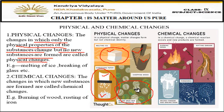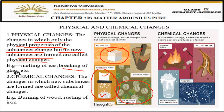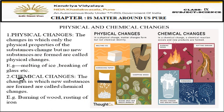We can separate the white balls and green balls again from the mixture, so it's only a physical change. Breaking of glass is also a physical change - a larger piece breaks into smaller pieces but no new substance is formed; the smaller pieces are also glass.